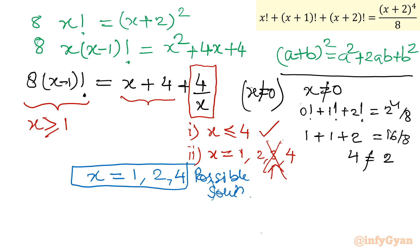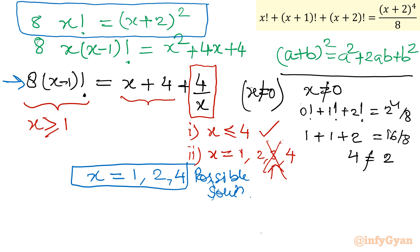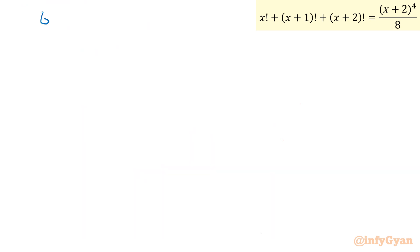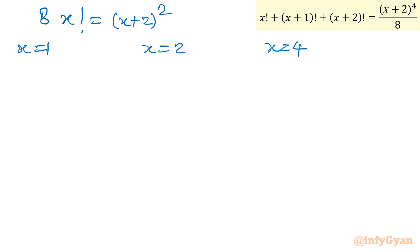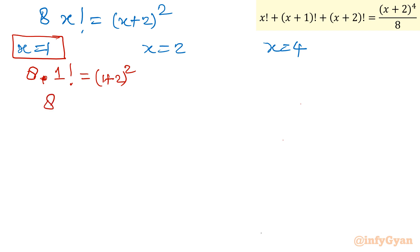We now check each candidate in the equation 8·x! = (x+2)^2. For x=1: LHS = 8×1! = 8, RHS = 3^2 = 9. Not equal, so x=1 is rejected. For x=2: LHS = 8×2! = 16, RHS = 4^2 = 16. Equal — so x=2 is accepted.